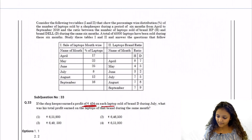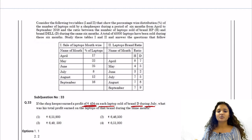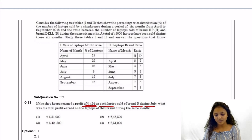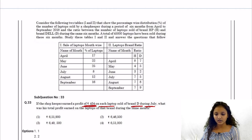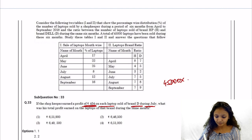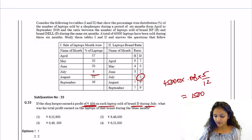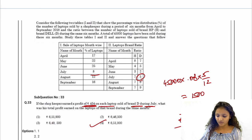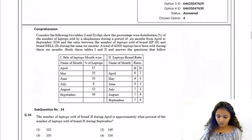Question 33: Profit of Rs. 434 on each Dell laptop sold in July. Number of units: 45,000 × 0.08 × 5/12 = 1,500. Total profit: 1,500 × 434 = 651,000. Option four is the correct answer.